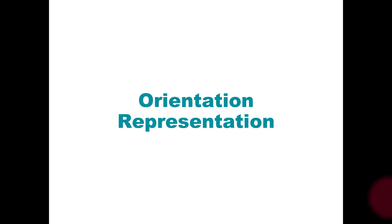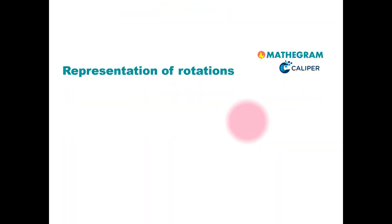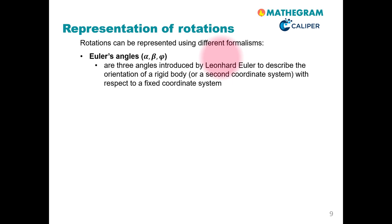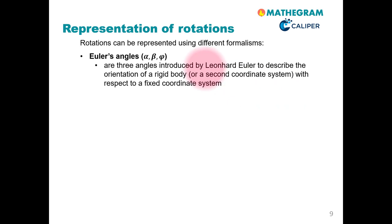Welcome back to this unit on non-spherical particles. The next part will deal with the orientation representation of non-spherical particles. In order to represent the rotational position of a particle, we have different options. The first, more traditional way is to use the so-called Euler angles, typically denoted as alpha, beta, and phi. These three angles, introduced by Leonhard Euler himself, describe the orientation of a rigid body with respect to a fixed coordinate system — essentially a sequential application of rotation angles to this coordinate system.